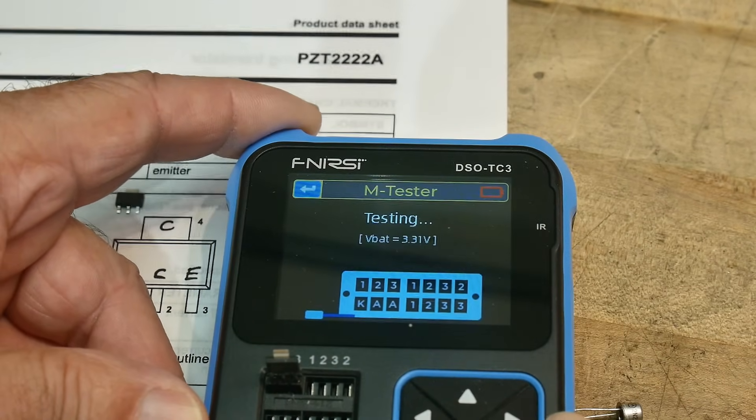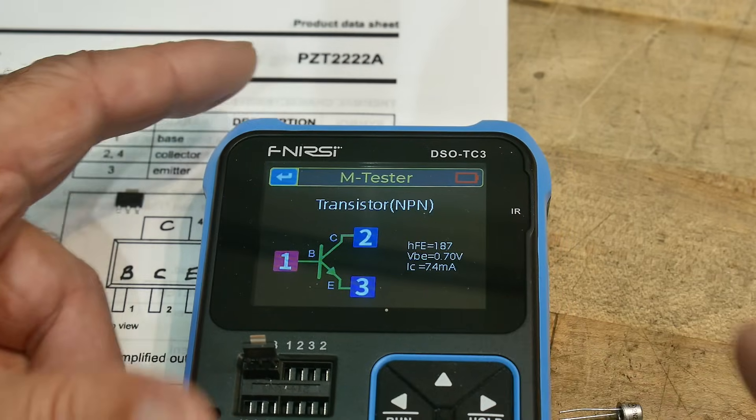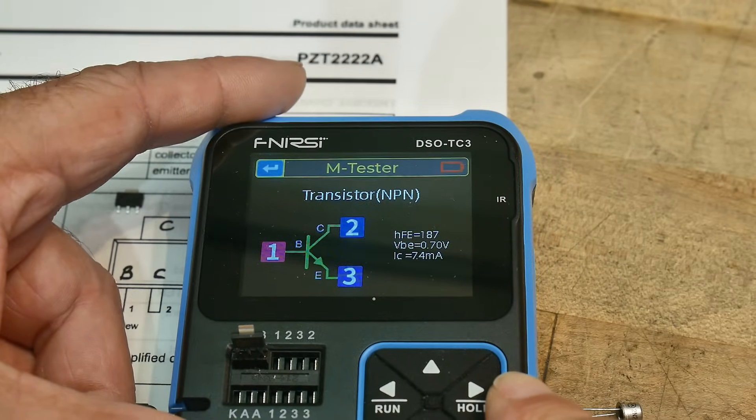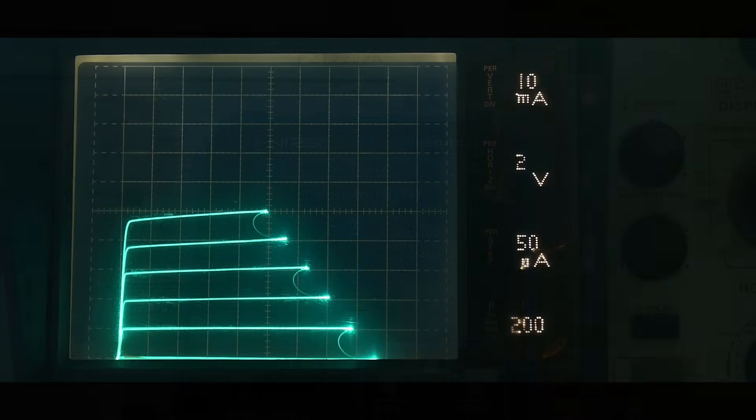Things just keep getting better with age. 187. Alright, let's take a look at a couple of these on the curve tracer. People like the curve tracer. Alright, there we go.